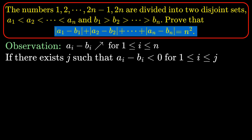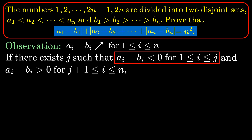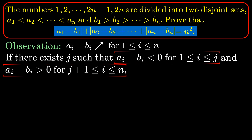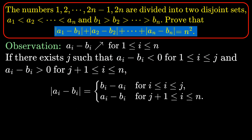b2 up to bn is decreasing. So if there exists a number j such that a_i minus b_i is less than 0 for 1 ≤ i ≤ j, and a_i minus b_i is greater than 0 for j+1 ≤ i ≤ n, then |a_i - b_i| = b_i - a_i for i between 1 and j, and |a_i - b_i| = a_i - b_i for i between j+1 and n, just by the definition of absolute value.